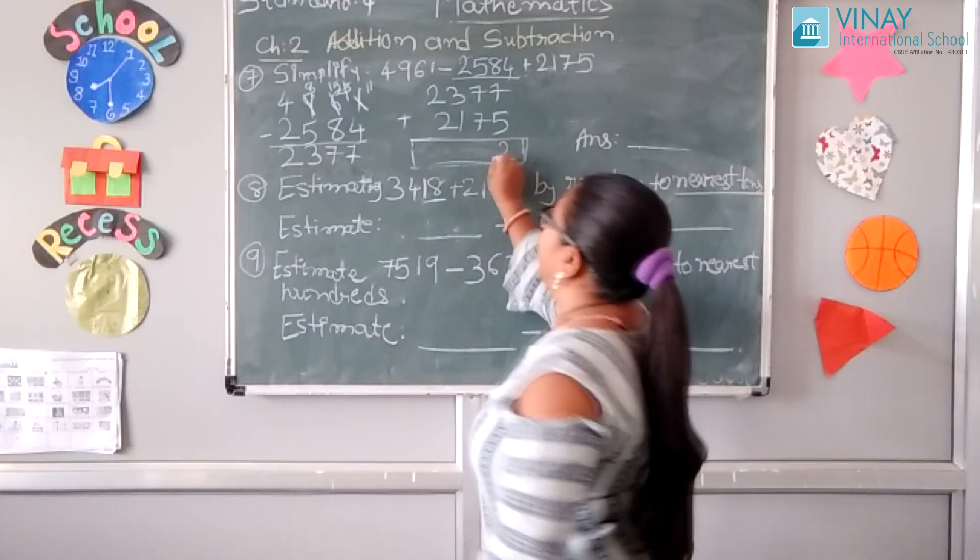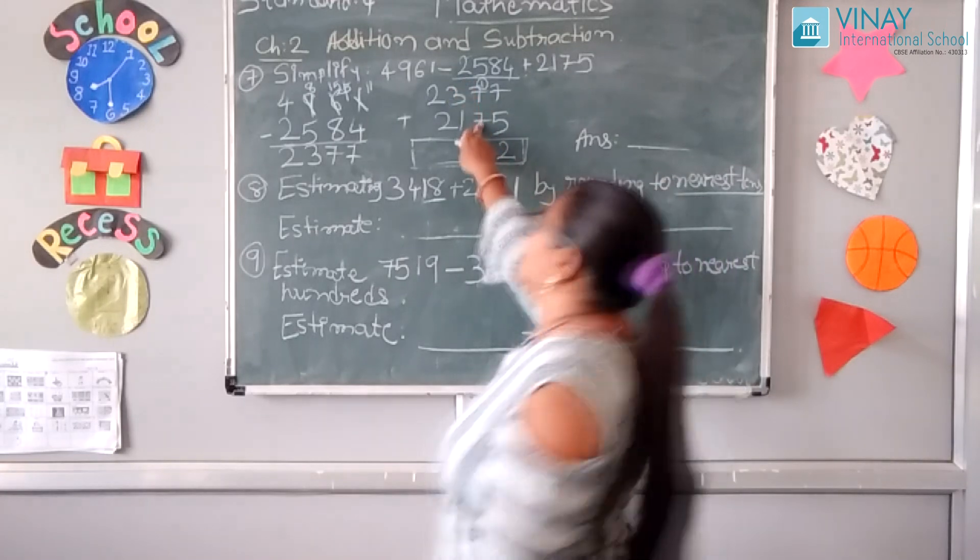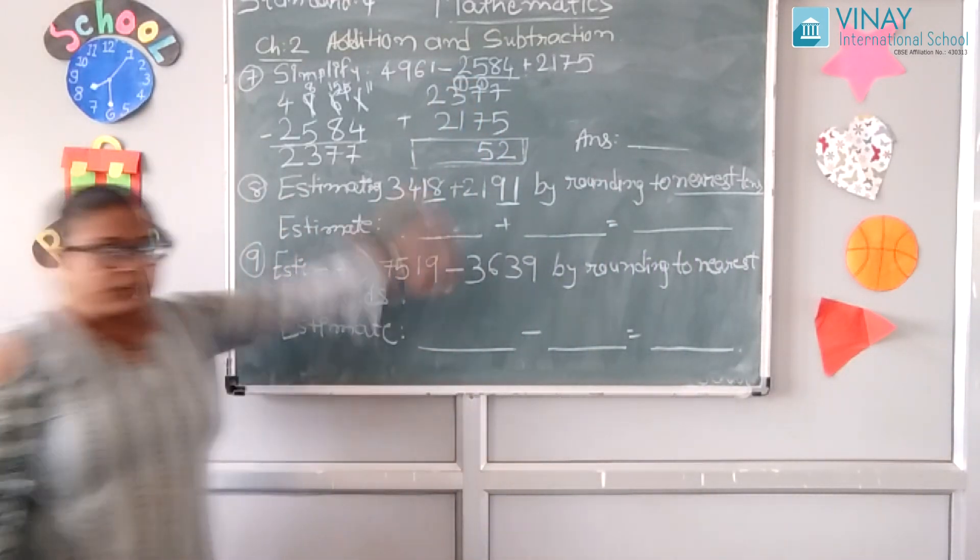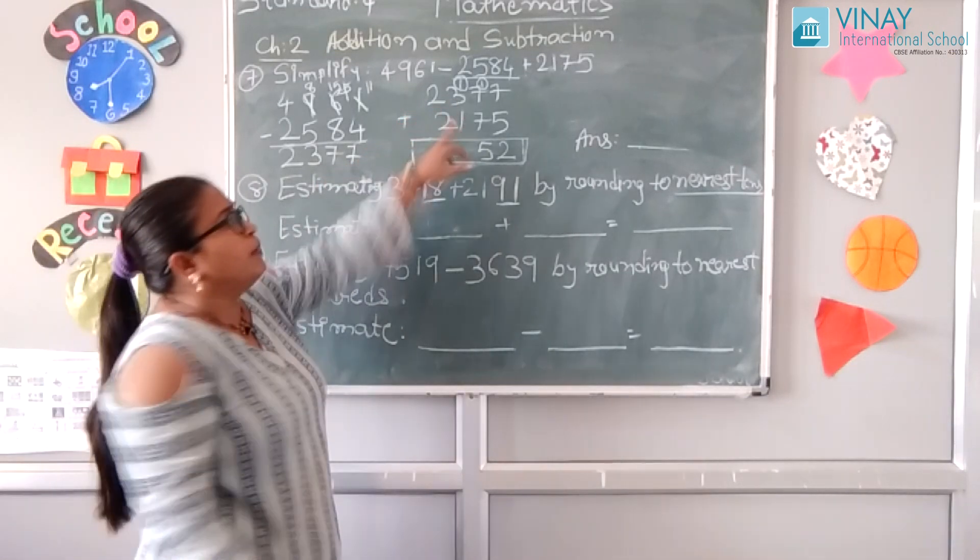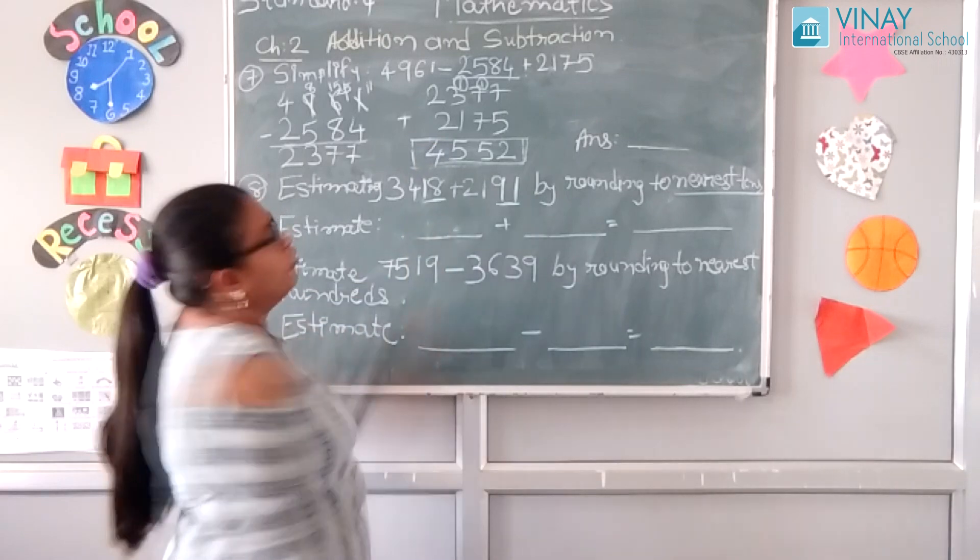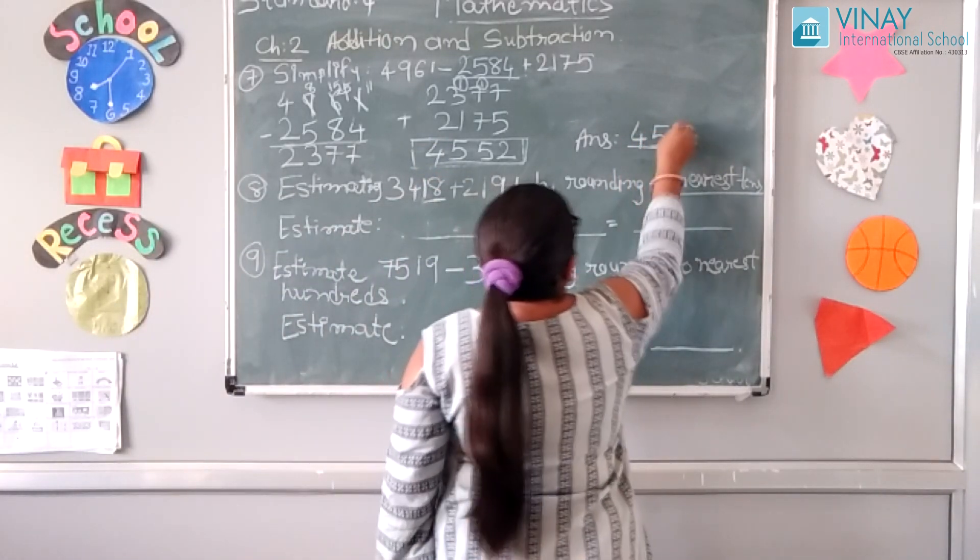7 plus 5 is 12, 1 carry over. 7 plus 1, 8 plus 7 is 15. 1 carry over, 3 plus 1 is 4, 4 plus 1 is 5, 2 plus 2 is 4. Final answer is 4552.